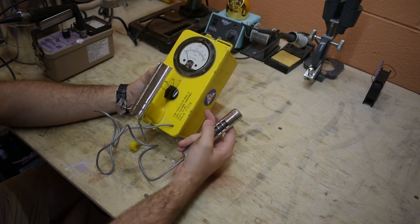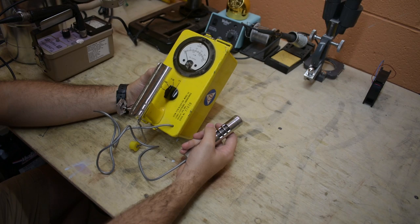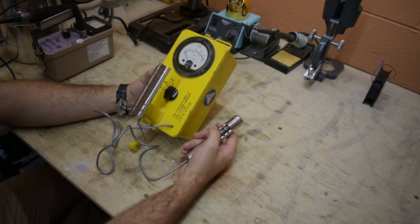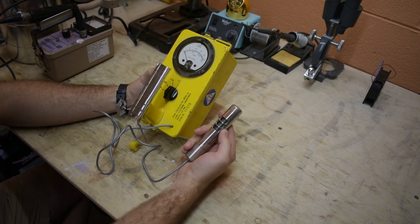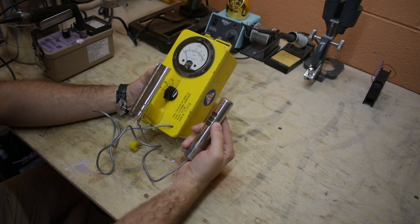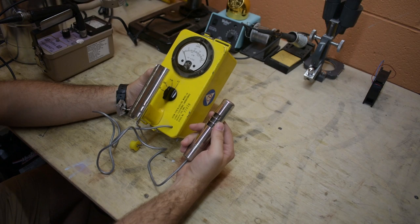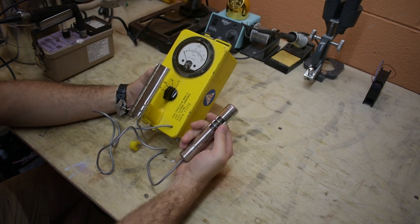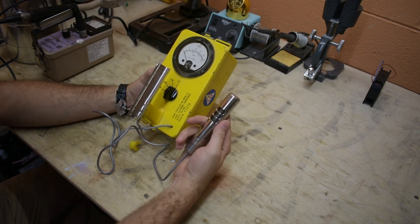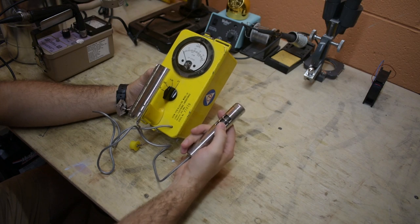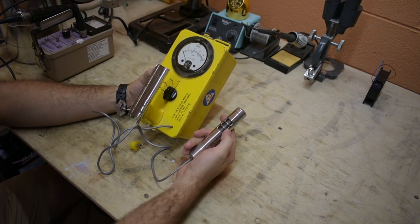This actually came along with another type of radiation detector, the CDV-715. This one was mainly for training. It is a Geiger tube and so it can detect pretty low levels of radiation, but in an actual nuclear war the levels of radiation you'd encounter would totally saturate this detector and it would probably be pretty worthless.